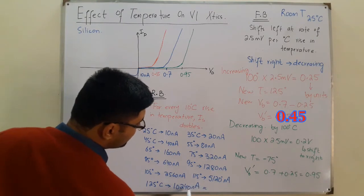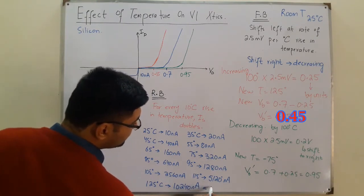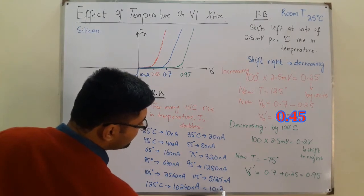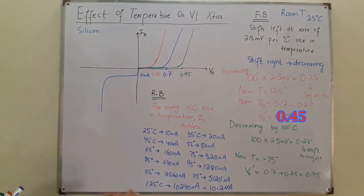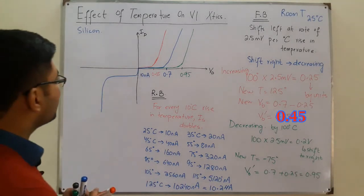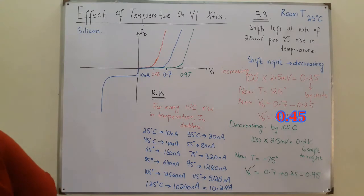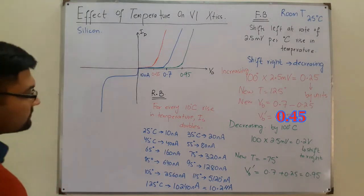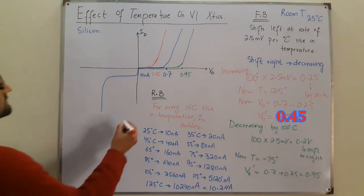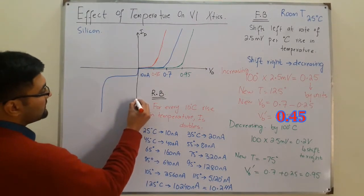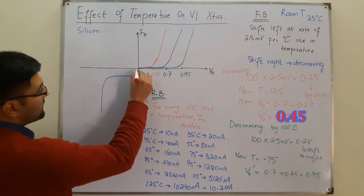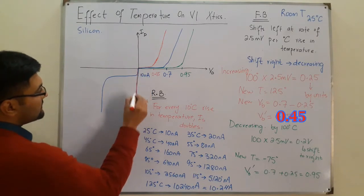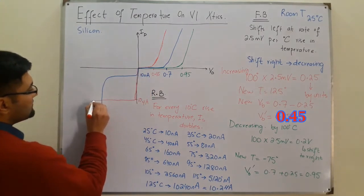At 115°C we have 5120 nano amperes, and at 125 degrees finally we have 10240 nano amperes, which is equivalent to 10.2 micro amperes. So from 10 nano amperes at room temperature, we are at 10 micro amperes at 125°C — a 1000-fold increase. By increasing temperature the reverse saturation current has increased, and so has the breakdown voltage.